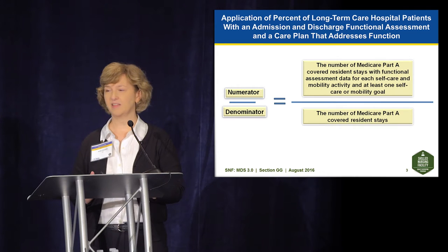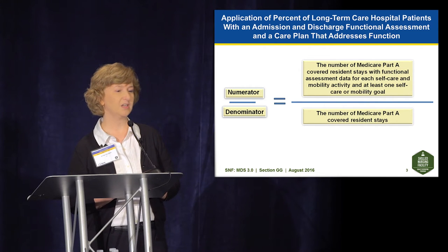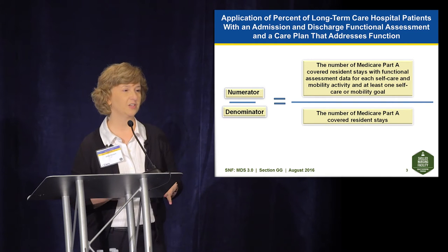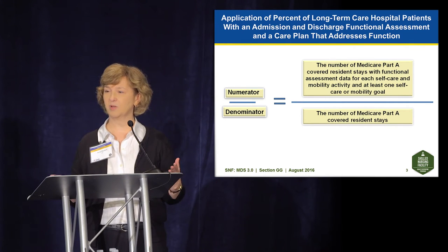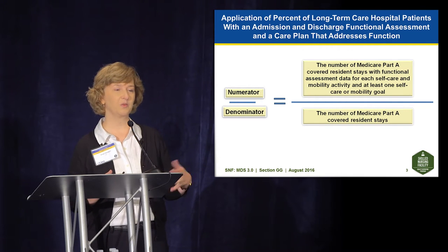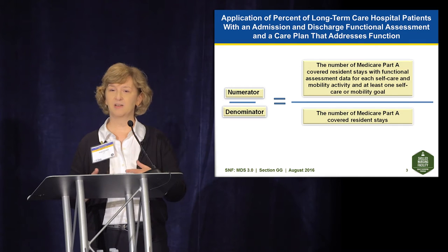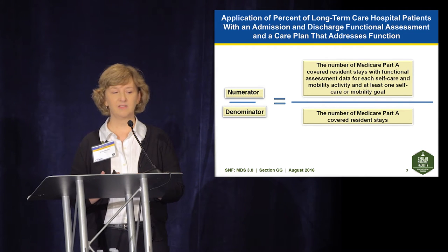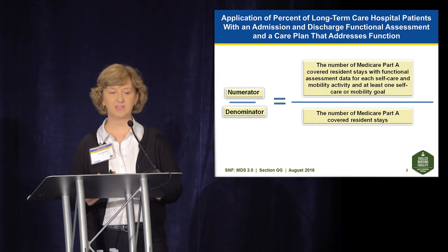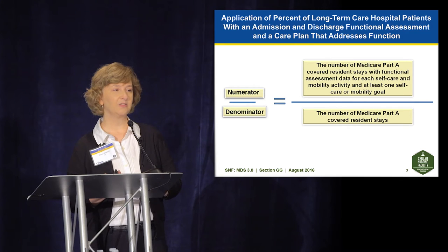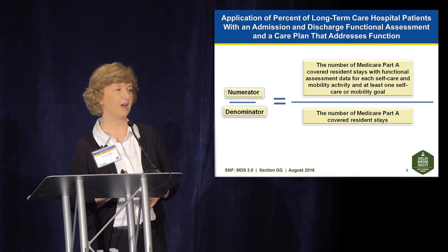The quality measure that was the basis for these items being added to the MDS is called the Application of the Percent of Long-Term Care Hospital Patients with an Admission and Discharge Functional Assessment and a Care Plan that Addresses Function. This measure was originally developed for long-term care hospitals but was adapted for use across multiple settings, including skilled nursing facilities. The numerator is the number of Medicare Part A covered resident stays with functional assessment data on admission and discharge, with at least one goal for self-care or mobility submitted. The denominator is all covered Medicare Part A resident stays.